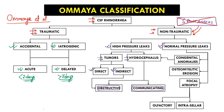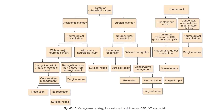Normal pressure leaks can be because of: firstly, congenital anomalies; secondly, osteomyelitic erosions; thirdly, focal atrophy involving the olfactory region or intracellular region. Hydrocephalus may also be associated with normal pressure leaks in very few cases, but mostly it is associated with high pressure leaks.